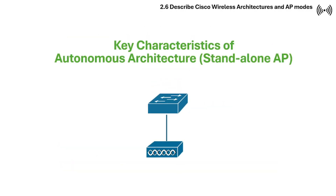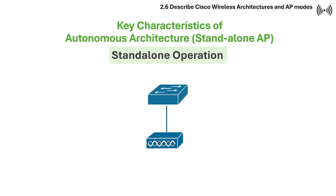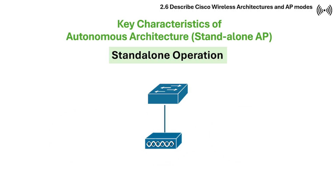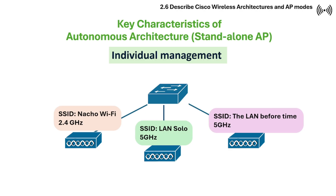Here are the key characteristics of autonomous architecture. First is standalone operation — each access point acts as an independent entity making its own decisions regarding wireless clients and network connectivity. Access points are configured and maintained separately with parameters like SSID and wireless settings, and they are configured one by one.